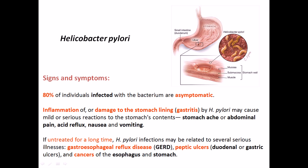It can cause severe inflammation or damage to the stomach lining in certain cases. When the stomach lining is damaged — specifically the mucus layer — the acid content of the stomach starts to degrade the cells of the stomach lining. As a result, it can cause stomach ache, abdominal pain, acid reflux, nausea, and vomiting. These are all symptoms of Helicobacter pylori infection.